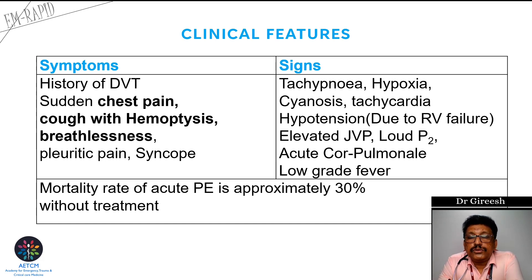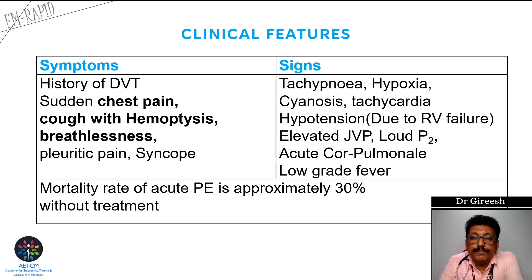Signs: the most common sign is tachypnea. Some patients can have hypoxemia, cyanosis, tachycardia, and hypotension due to RV failure, elevated JVP, and loud P2 on auscultation. Patients can have acute features of cor pulmonale and RV failure like pedal edema and tender hepatomegaly. Low-grade fever can occur due to inflammation. The mortality rate of acute pulmonary embolism is around 30% without treatment.